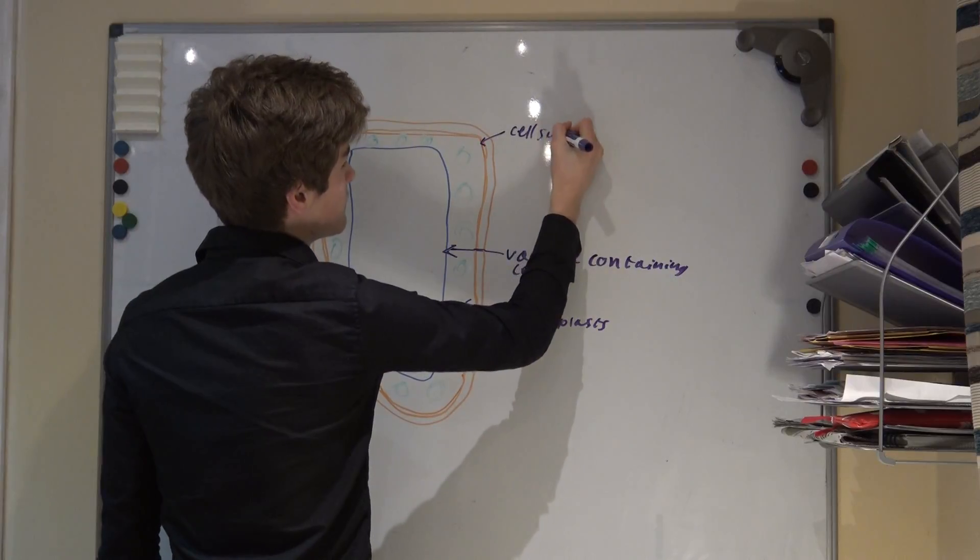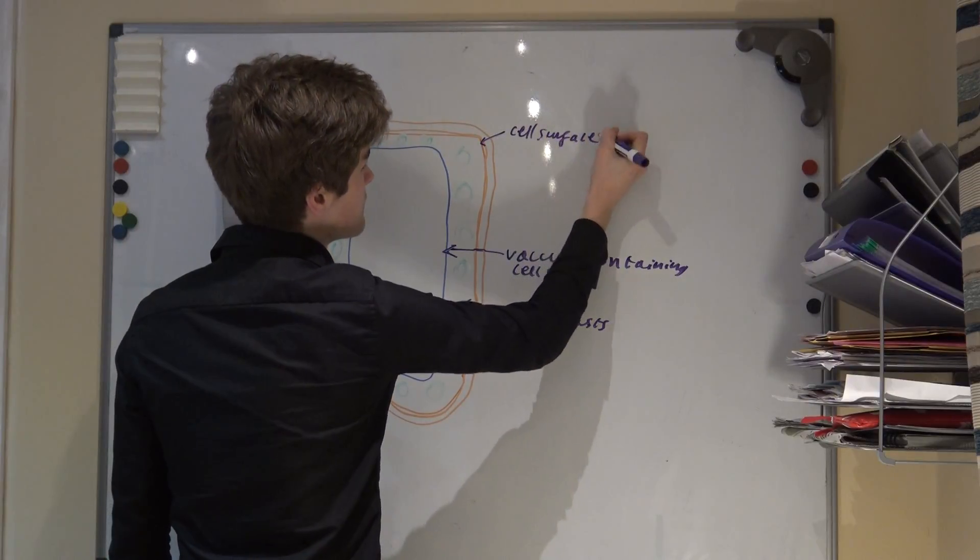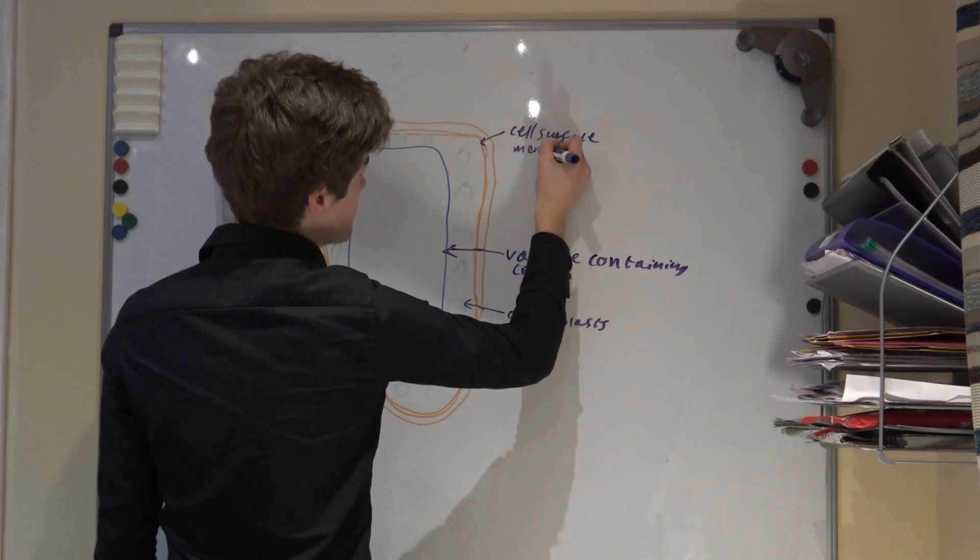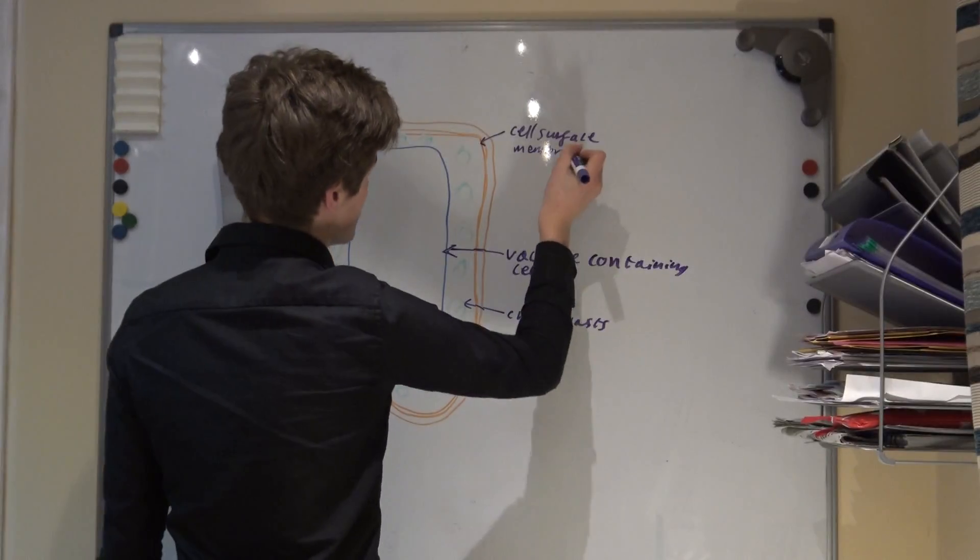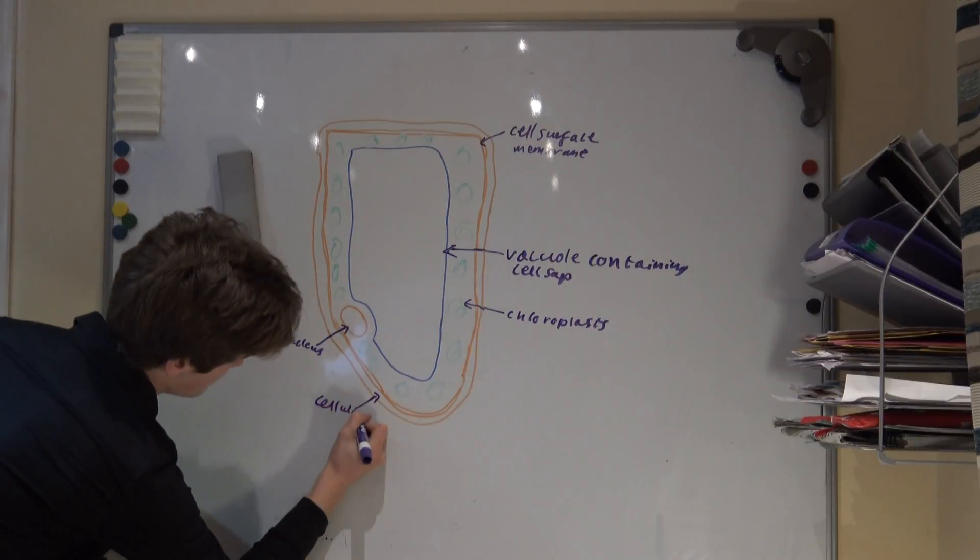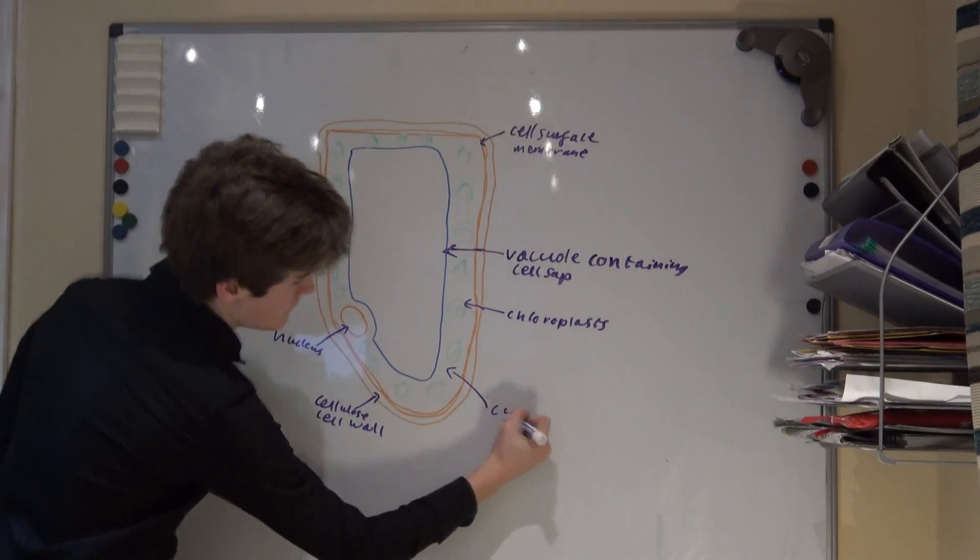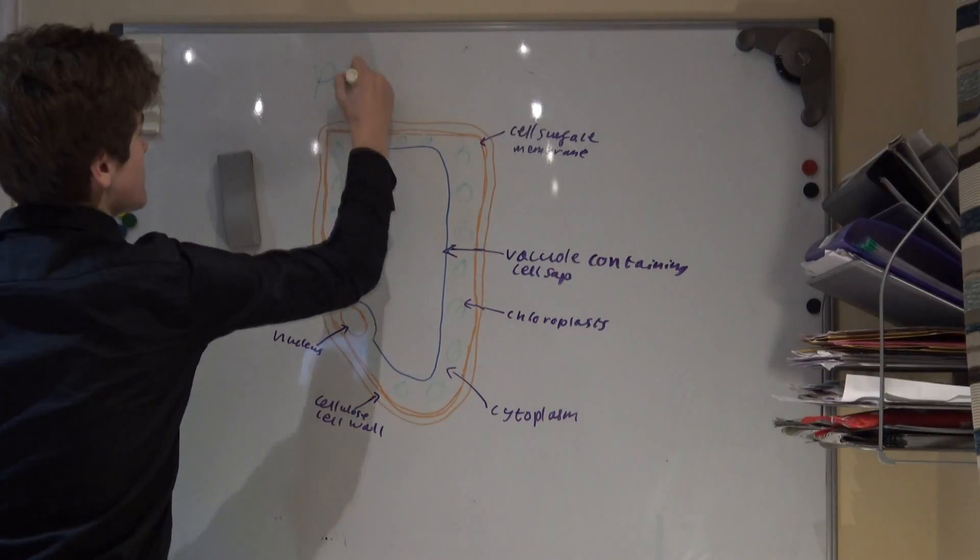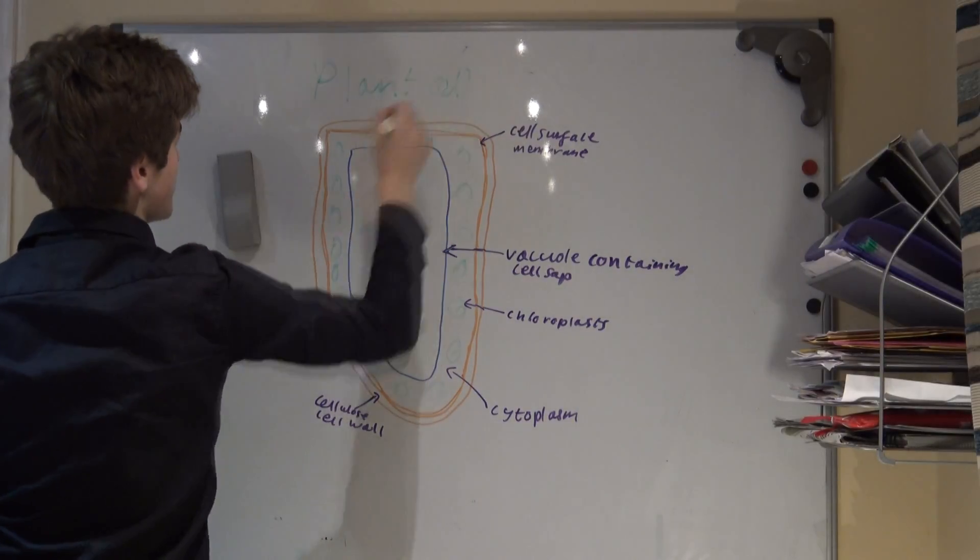Several thylakoids stacked together are called a granum. The grana, which is multiple granum, are joined by membranes called lamellae. It is the grana that contain the chlorophyll pigments where light-dependent reactions occur during photosynthesis. Like mitochondria, chloroplasts also contain DNA and ribosomes, so are therefore able to make their own proteins.